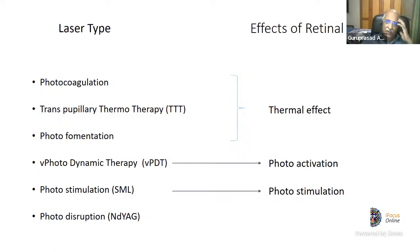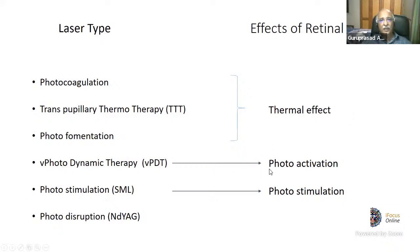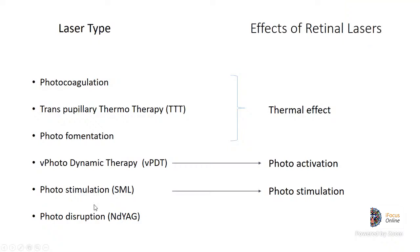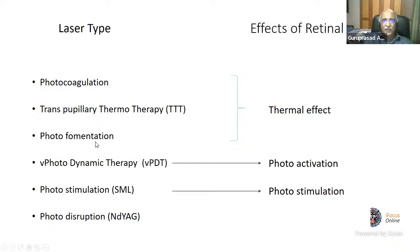Laser types and their corresponding effects on the retina: photocoagulation, transpupillary thermotherapy (TTT), and photo fermentation all have a thermal effect. Verteporfin photodynamic therapy works through photoactivation. Photostimulation is the mechanism of subthreshold micropulse laser (SML). Photodisruption is used with the YAG laser — for example, in capsulotomy and in retinal applications, which I'll demonstrate with examples.